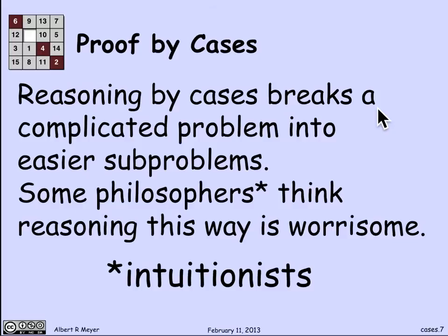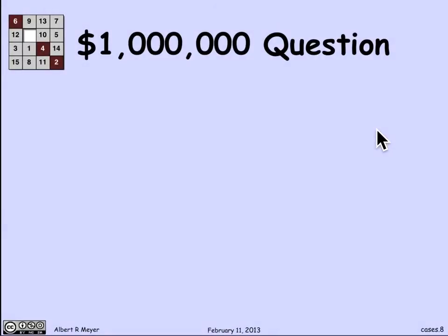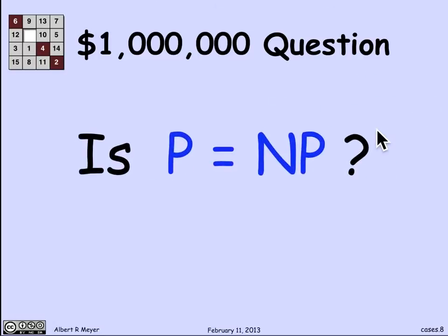Now, the truth is that there are some philosophers who worry about reasoning by cases for kind of subtle reasons. They're called intuitionists, and here's what bothers them. Let me illustrate it. There's a million-dollar Clay Institute question, one of, I think, a dozen or so questions, that are considered to be the major open problems in various disciplines of mathematics. And one of the disciplines of mathematics is complexity theory in computer science, computational complexity theory. This question is known as the P equals NP question.